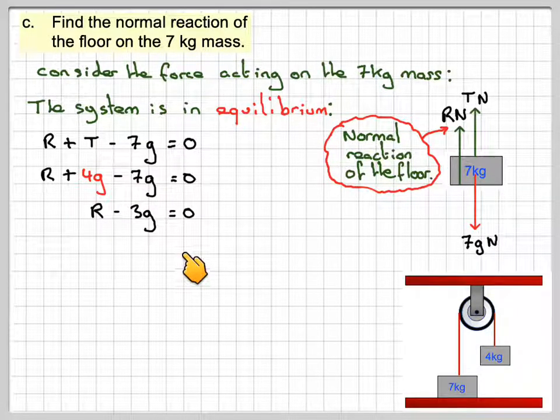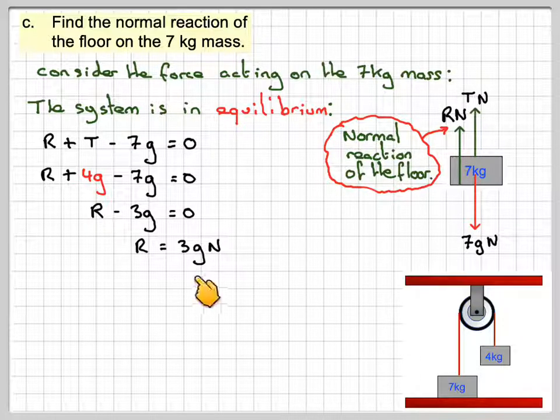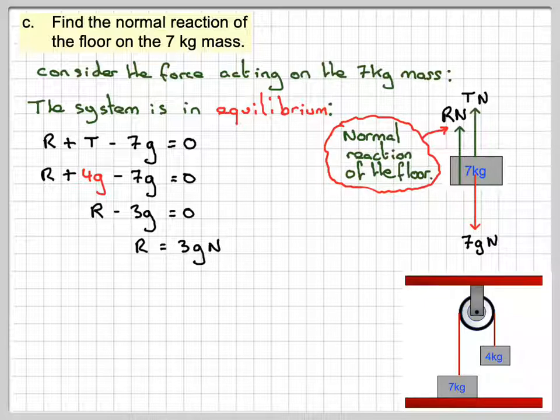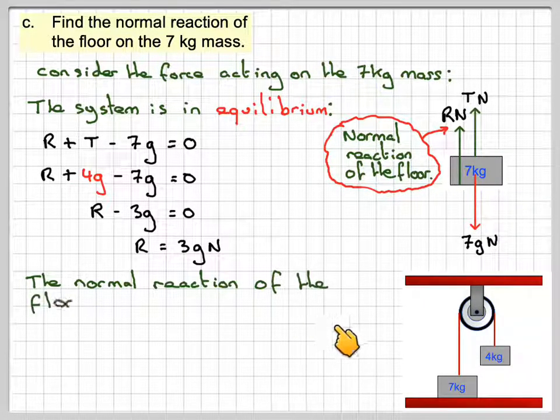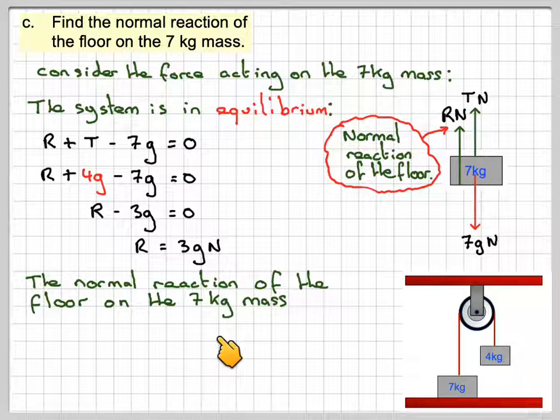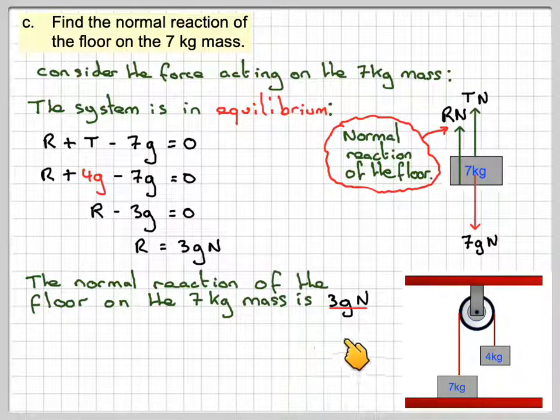4g minus 7g gives me 3g, so we've got R minus 3g is equal to 0. It gives that R is equal to 3g newtons. Therefore, the normal reaction of the floor on the 7kg mass is going to be 3g newtons.